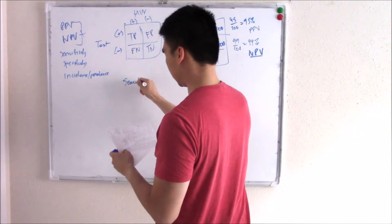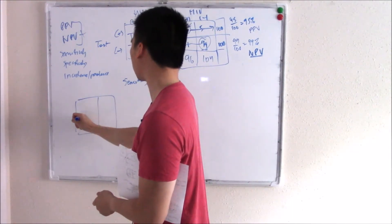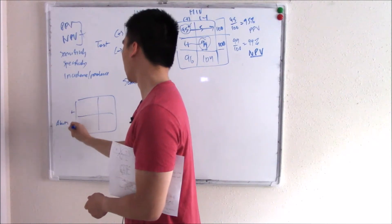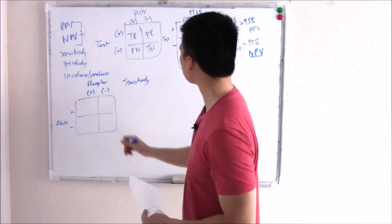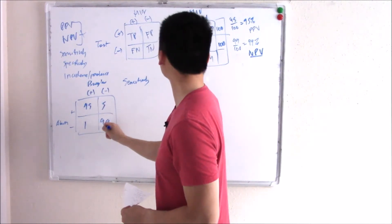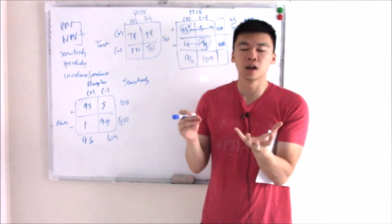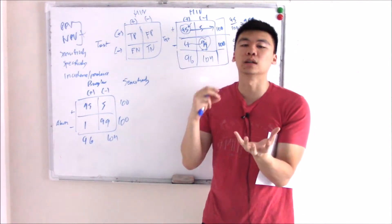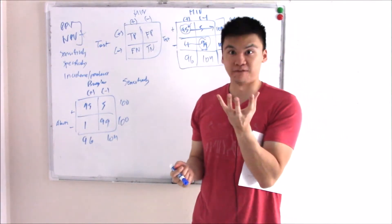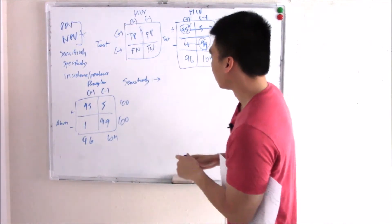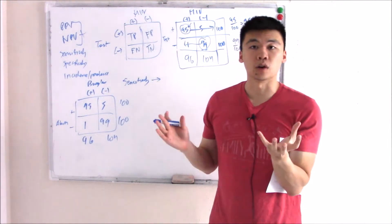Let's talk about sensitivity, using a different, more intuitive example — instead of an HIV test, we have a burglar alarm, and instead of looking for HIV, we're trying to look for a burglar. If you have a very sensitive alarm, it'll pick up anything: when the AC turns on, when a cat moves by, when there's a gust of wind. So of course it's going to pick up a burglar. A sensitive test will pick up everything. Because it'll alarm for anything, if it doesn't sound, then you know you don't have anything.